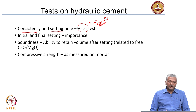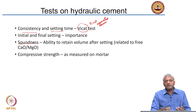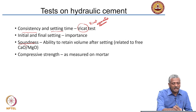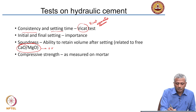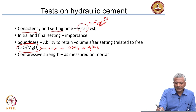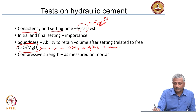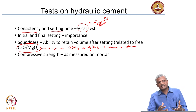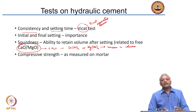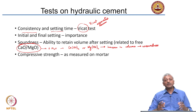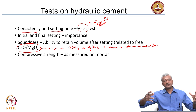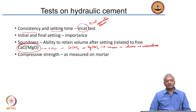The other important characteristic to test is soundness. Sometimes, because of the nature of raw materials and the manufacturing process, you may have free calcium oxide or magnesium oxide present inside your cement. When this reacts with water, it can lead to formation of calcium hydroxide or magnesium hydroxide, which may lead to an increase in volume. In a set cement paste, if you have too much excess free lime or free magnesia, the volume increase will lead to cracking. That is called unsoundness — soundness is the ability to retain volume; unsoundness means volume increases after setting.